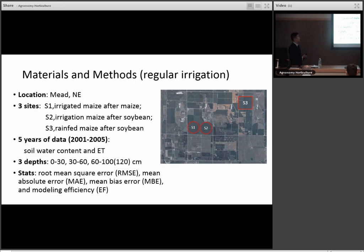So this is the first study. We test the performance of the hybrid-maize model on soil water in silt loam soil under regular and deficit irrigation. The reason we choose silt loam is because it's the main soil type in Nebraska. For the first experiment, we get the data sets in Nebraska. It's a long-term study, and I really appreciate the professor sitting next to my advisor for providing the data sets. We have three sites: irrigated maize after maize, irrigated maize after soybean, and rainfed maize after soybean. The data sets we have are soil water contents and ET.